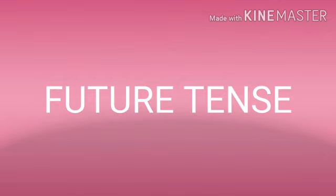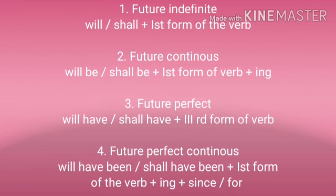Future tense. Future indefinite: will/shall plus first form of the verb. Future continuous: will be/shall be plus first form of the verb plus I-N-G. Future perfect: will have/shall have plus third form of the verb.